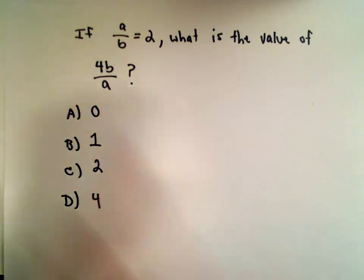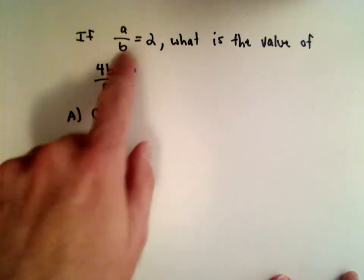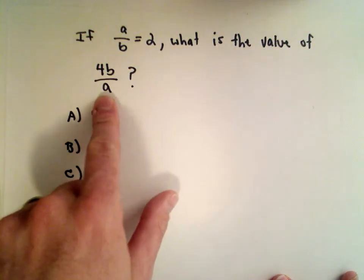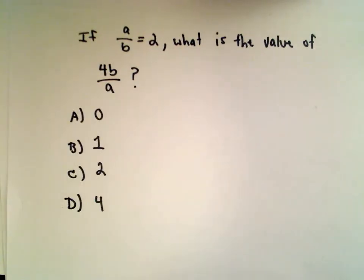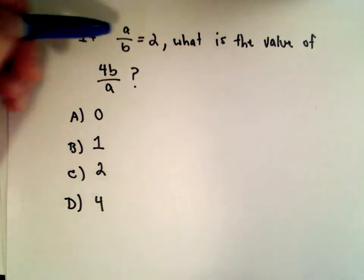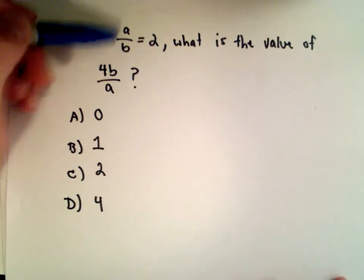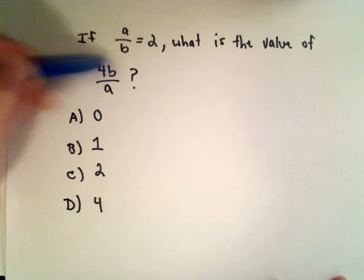Now we could certainly do some algebraic manipulation and solve for A or B and then substitute it in here and do stuff like that. Don't do that. I definitely wouldn't do that on this question. I would just pick a value of A and B so that when I divide I get 2 and then I would plug them in here.